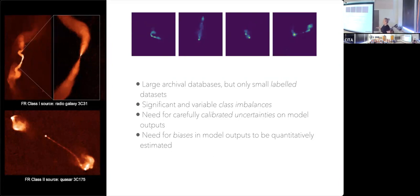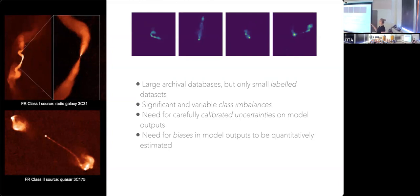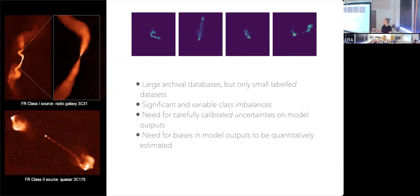Most machine learning and deep learning algorithms provide point-like estimates — they do not give you uncertainties on their outputs, they do not tell you how confident they are. Softmax probability is not a reliable metric. We need methods for extracting carefully calibrated uncertainties in our models, and we need to know how many false positives we're getting for a certain degree of confidence. Every astronomer knows how much work we put into understanding selection biases from our instrumentation. If you then put an AI model on top that introduces its own biases, you could undo all of that work.